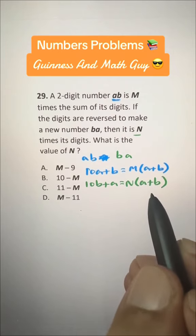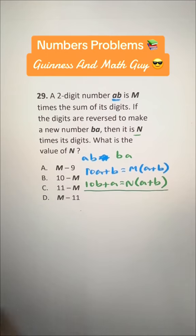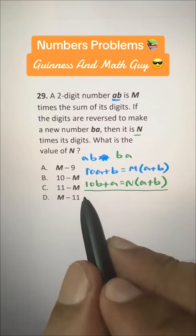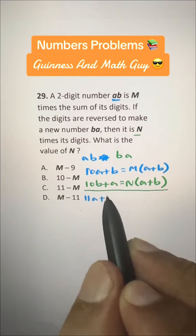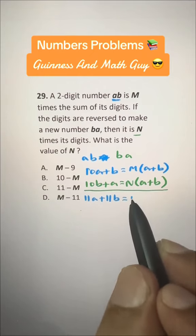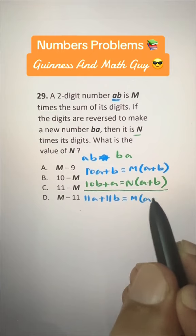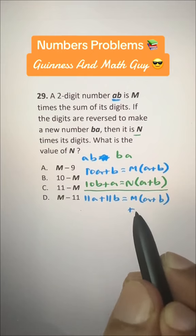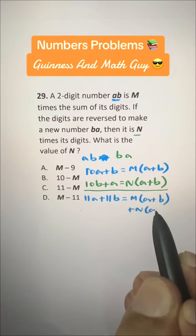So, again A plus B. Now, if we add these two, we have 11A plus 11B is equal to M times A plus B plus N times A plus B.